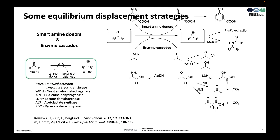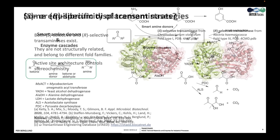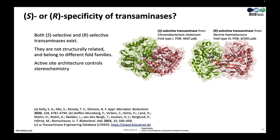Now to the last slide about transaminases. Both S- and R-selective transaminases exist, and new sequences in proteins are continuously discovered, as reviewed in a very nice article by Brian Gilmore, Tom Moody, and colleagues. This means that either stereoisomer of a chiral amine can be made. Here is an example of an S-selective amine transaminase from the microbe Chromobacterium violacium. The S-selective ATAs belong to the fold type 1 family.